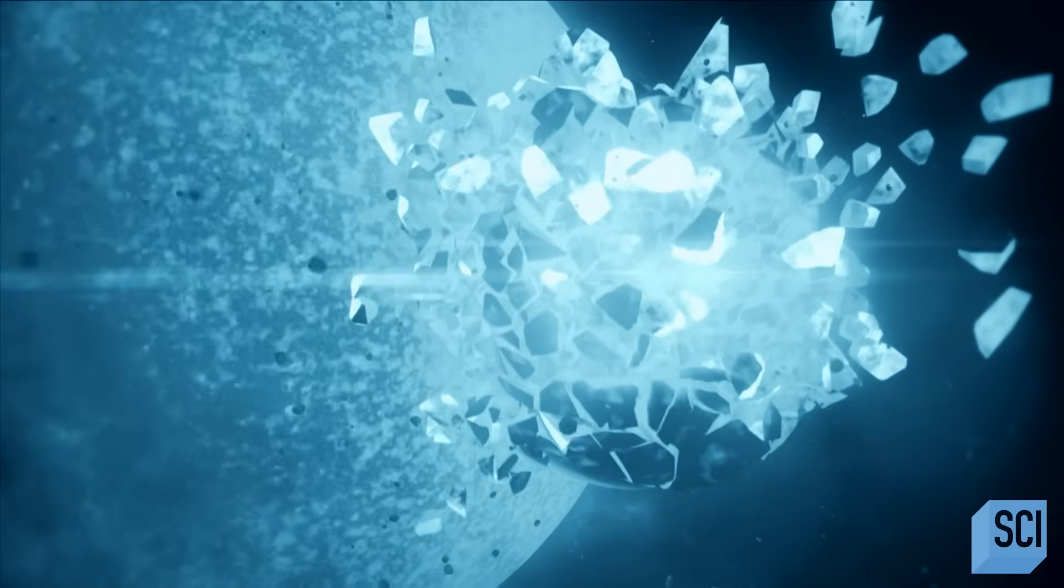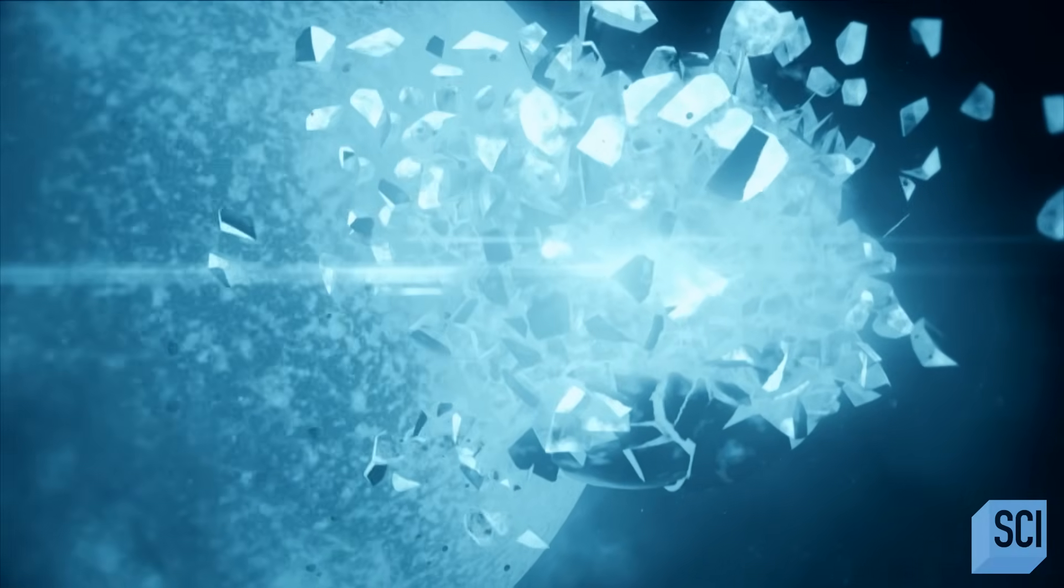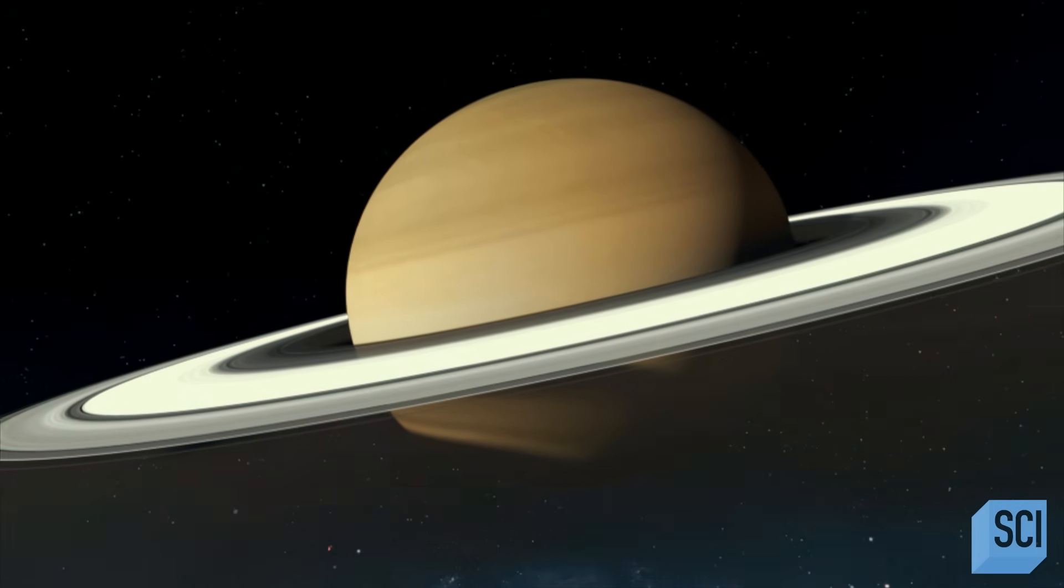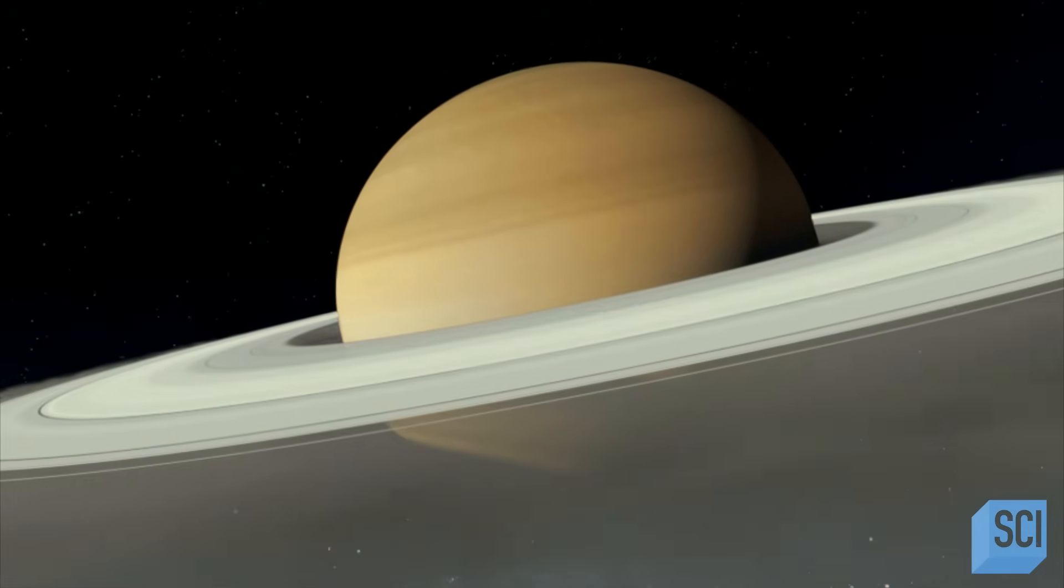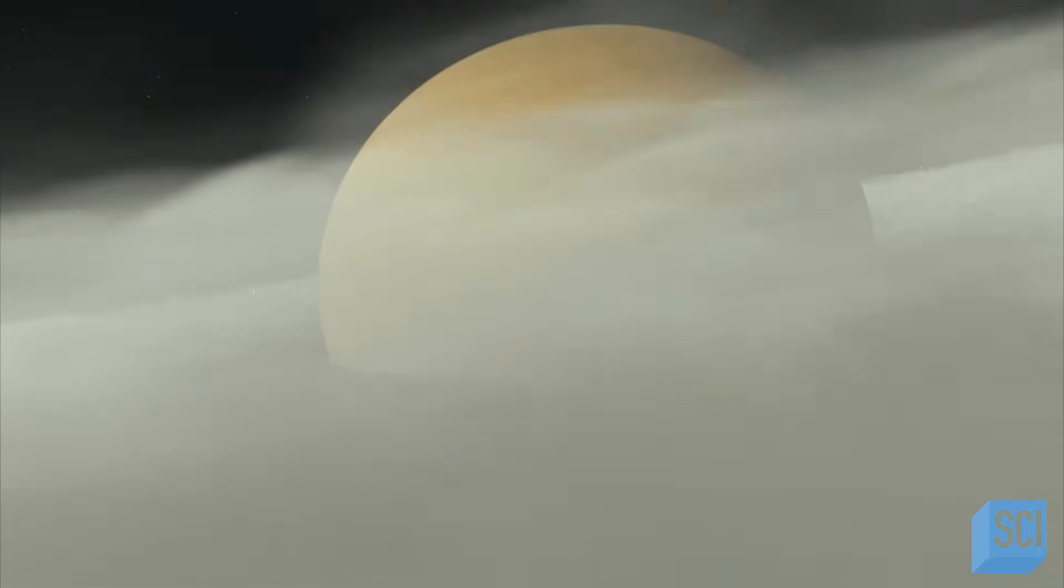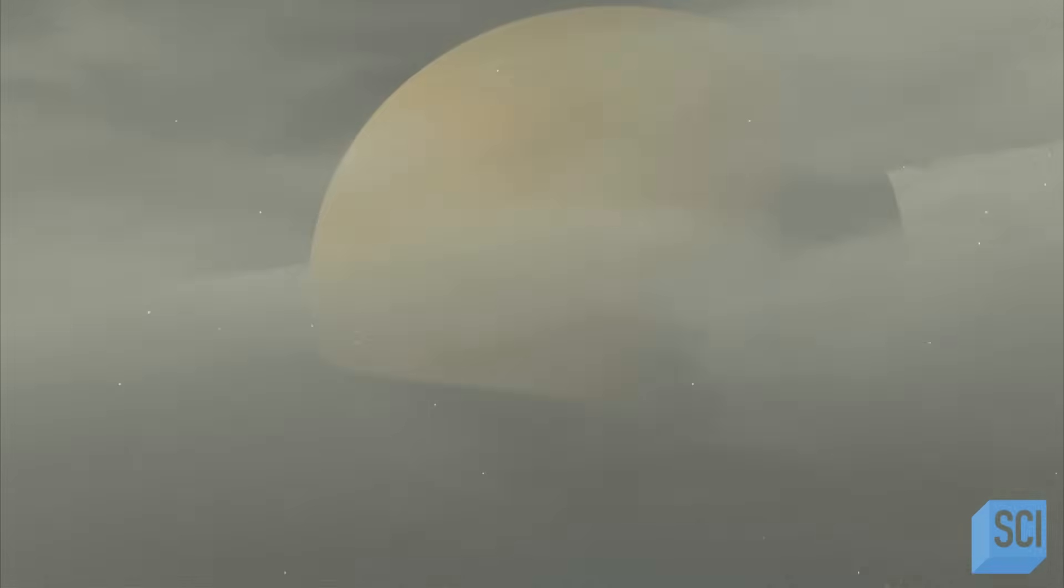A series of cataclysmic events created the rings that we see today. But what if the formation of the rings isn't the final link in this chain of violent events? One of the amazing things is we think this might be something of a cycle. Maybe over time, the rings will actually congeal and form moons again. Maybe Saturn's been doing this for quite a while.